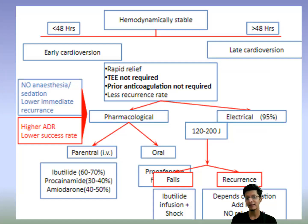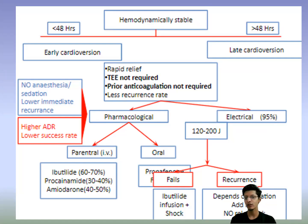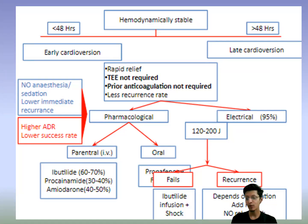If the patient is hemodynamically stable and has presented within less than 48 hours, early cardioversion is preferred. It gives rapid relief, no transesophageal echo is required, no trial of anticoagulation is needed, and it has a lower recurrence rate. For pharmacological therapy, parenteral options include ibutilide, procainamide, and amiodarone. Oral options include propafenone and flecainide.